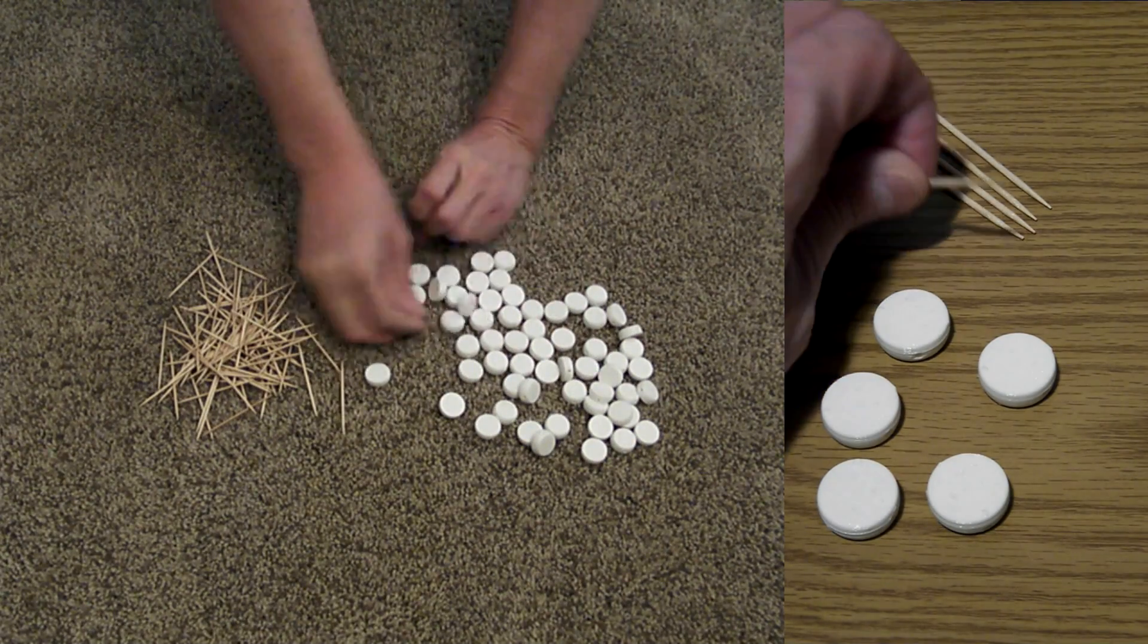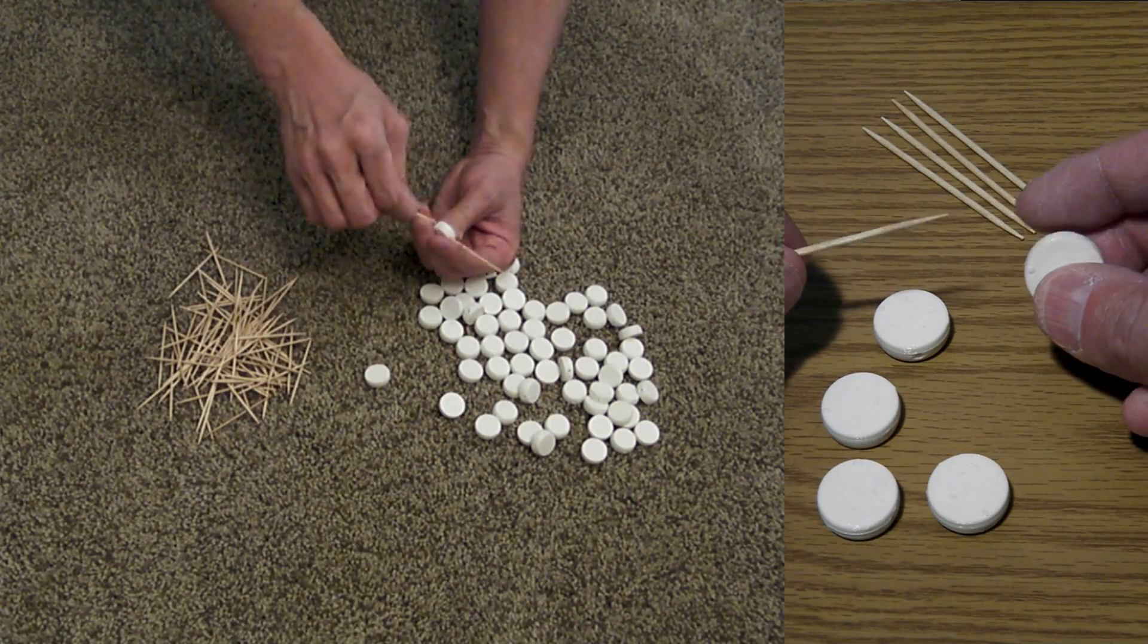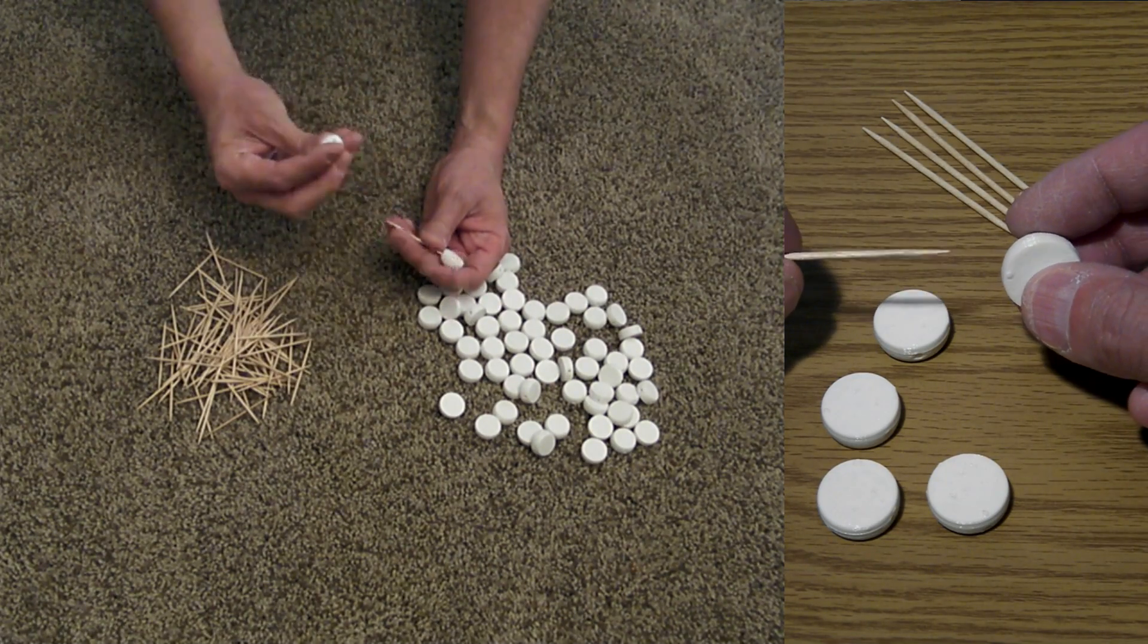The easiest way to make the buckyball, or truncated icosahedron, is to construct all of the pentagon facets first.